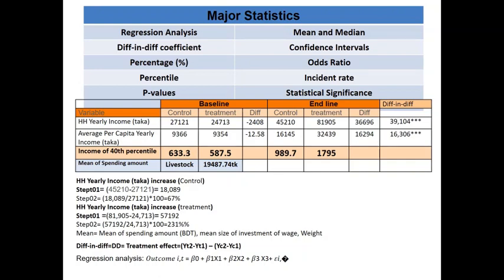For example, household yearly income in taka was analyzed using baseline and endline data according to the control and treatment groups. The difference-in-differences coefficient was also calculated, as shown in the table below.